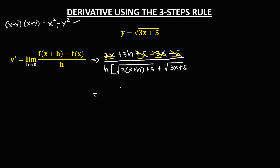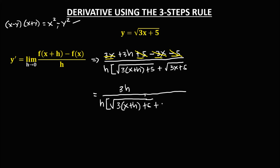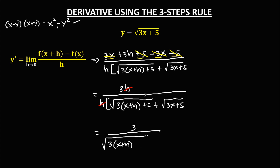Therefore, in the numerator we only have 3h, over h times the square root of 3(x plus h) plus 5, plus the square root of 3x plus 5. The h in the numerator and denominator cancel, leaving 3 over the square root of 3(x plus h) plus 5, plus the square root of 3x plus 5.